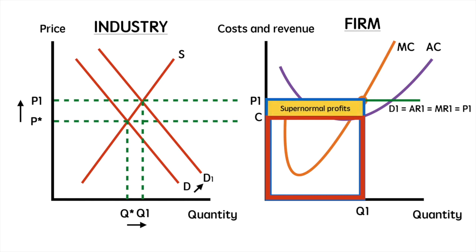Supernormal profits, or abnormal profits, can only be maintained in the short run. At this point the firm is not productively efficient as it is not operating at the lowest point of its average cost curve. However, it is allocatively efficient as the price consumers are paying is equal to the marginal cost of production.